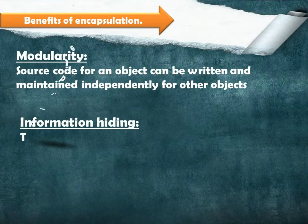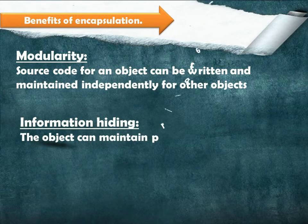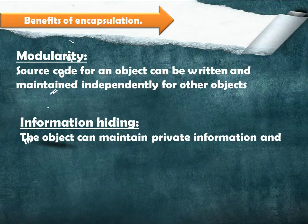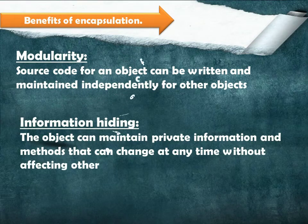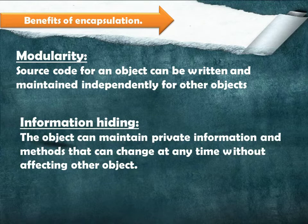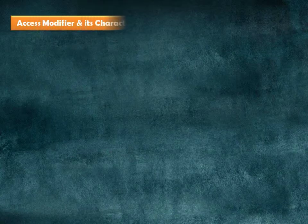What is modularity? Source code for an object can be written and maintained independently of other objects. What is information hiding? The object can maintain private information and methods that can change at any time without affecting other objects. These are the two key benefits of encapsulation.